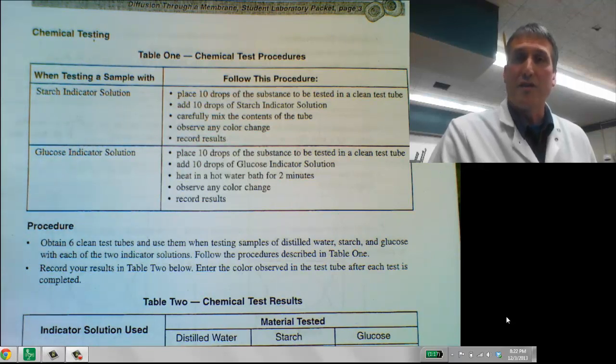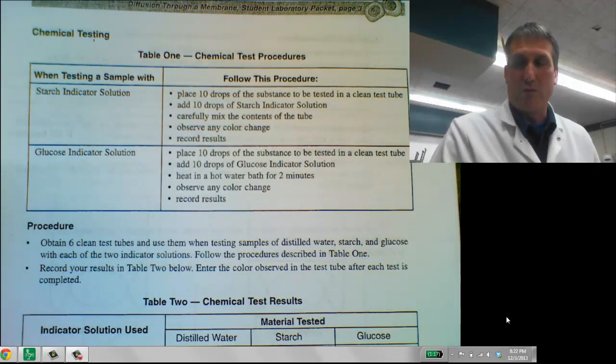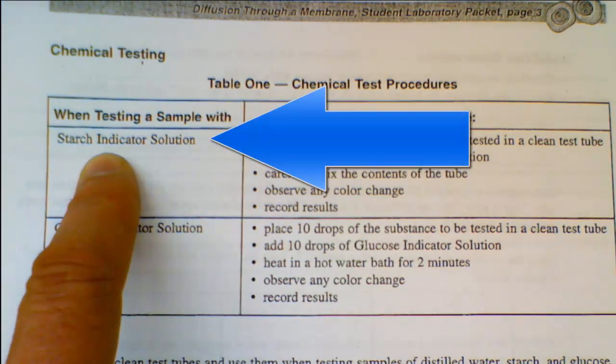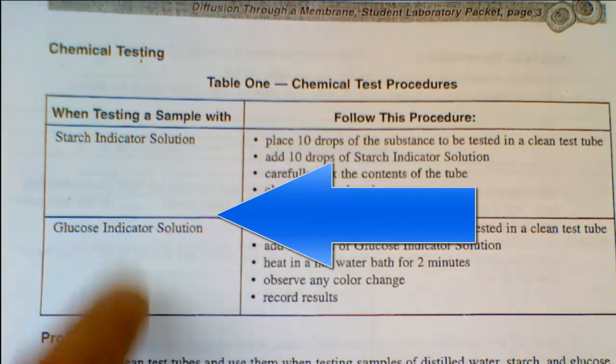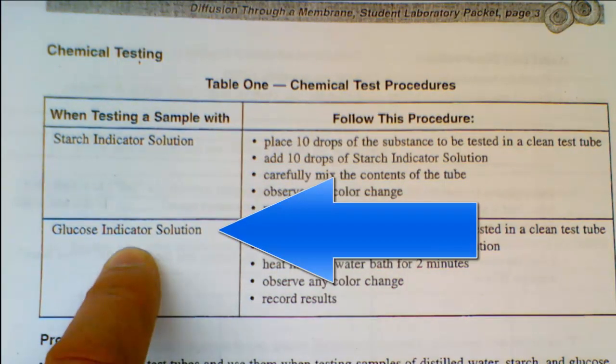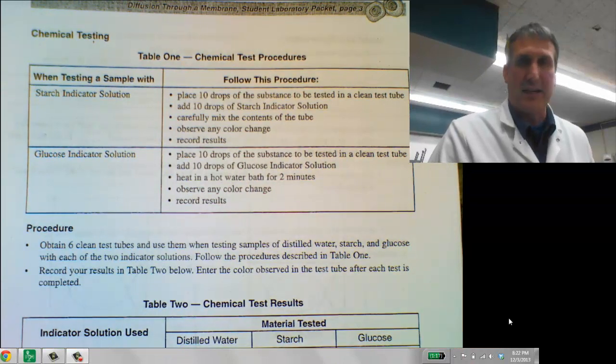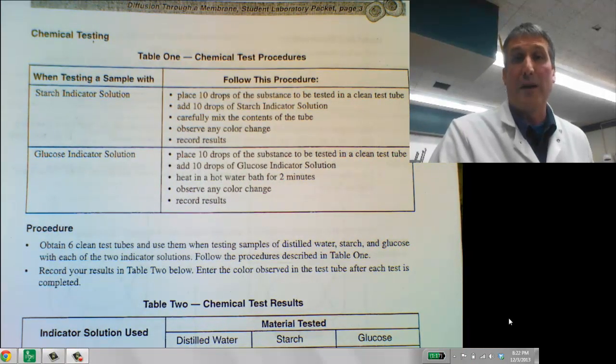Because remember, molecules are so small they cannot be seen. Many times you have to use indicators to tell if the molecules are where you think they are. So we're going to be looking at a starch indicator to see if the starch moved. And we're also going to be using a glucose indicator. I will cover how to use those indicators in another video. I hope that was helpful.